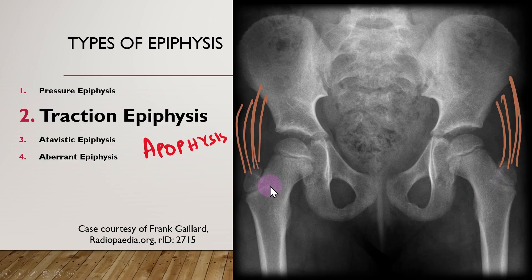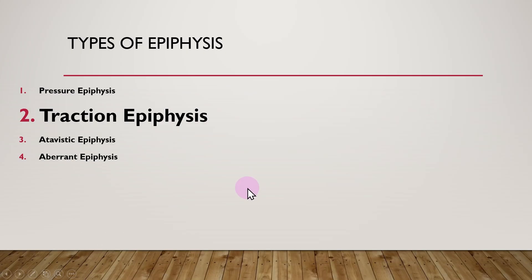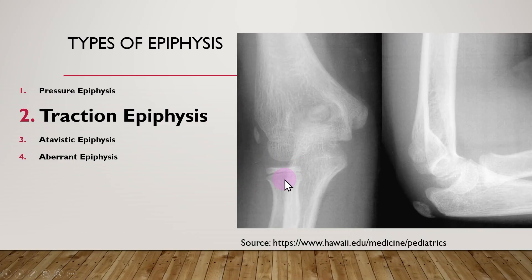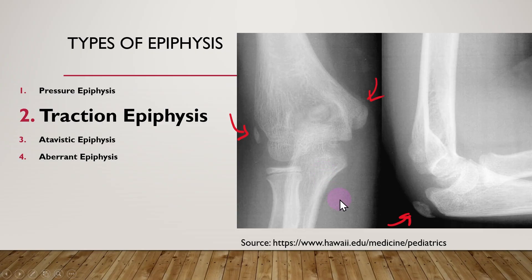Traction epiphyses, if they are not fused, can be easily mistaken for fractures — specifically an avulsion fracture. Let us have a look at the X-ray of a child's elbow, which is one of the common sites of injuries. It is very important to note that the lateral epicondyle, medial epicondyle, and the olecranon are not fractures — they are secondary ossification centers. Whether it is a secondary ossification center or a fracture depends on the age of the child and the order in which structures ossify in this region.